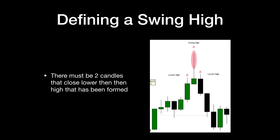What defines a swing high? Basically, you're looking for a candle that forms a high — the wick is higher than the candles on each side of it. A swing high requires two candles next to a middle candle that close lower than that middle candle.